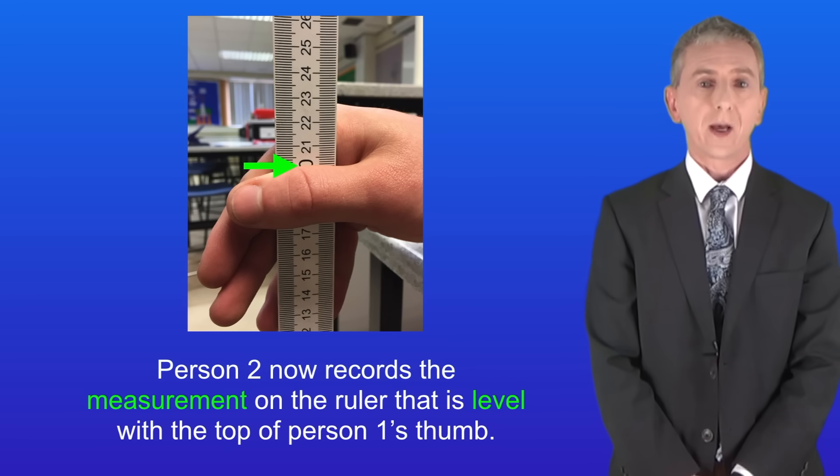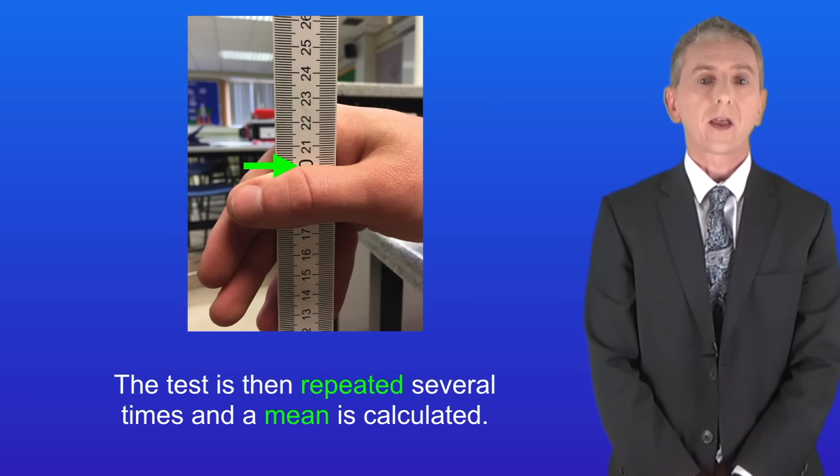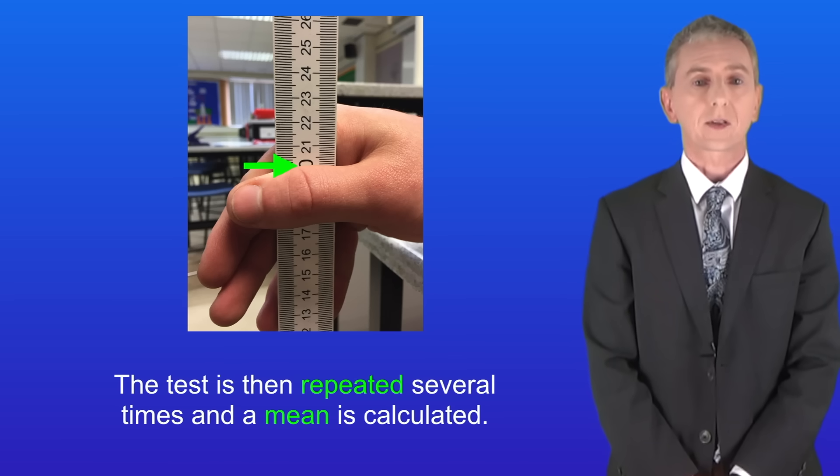Person two now records the measurement on the ruler that's level with the top of person one's thumb. At this point person one has a short rest. The test is then repeated several times and a mean is calculated.